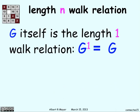And G itself, when you think about it, is a length one walk relation. The graphs define these relations, and there's an edge from one vertex to another if there's a length one edge from one vertex to another.